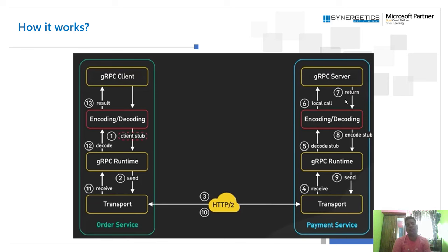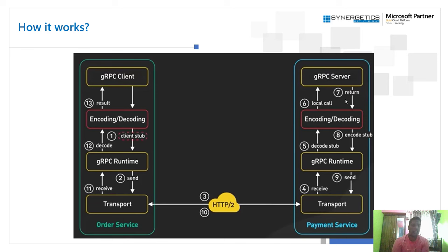The transportation channel is responsible for transferring the data to the server endpoint. Once the server receives the request, a gRPC runtime running on the server decodes the request, understands what is needed, and executes that particular request. The execution happens in traditional application code using languages like .NET, Java, or Python. Once the response is generated, the data is encoded back into the binary protobuf format and sent through the transport channel back to the client, where it is decoded into the application data object.